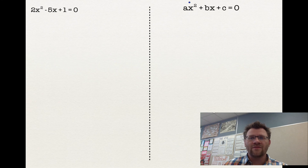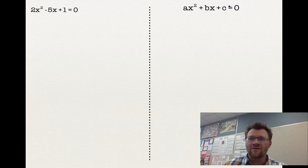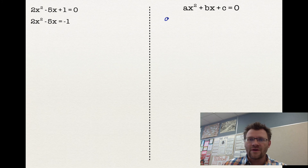Here we have the standard form ax² + bx + c = 0 alongside an actual example. We're going to complete the square on the left-hand side — every step we do on the example, we'll do on the standard form using variables instead of numbers. First step: move the constant to the right-hand side. So 2x² − 5x = −1 in the example becomes ax² + bx = −c in the general form.